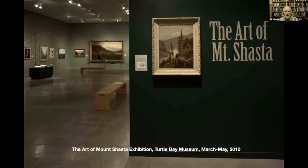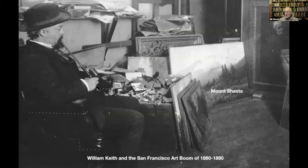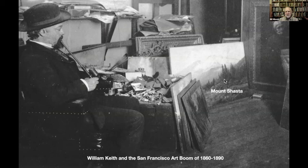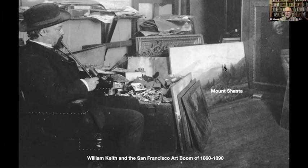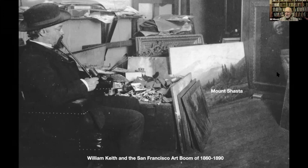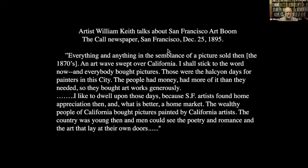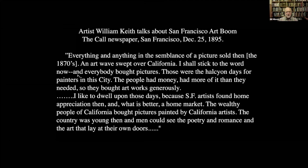So the San Francisco art boom, 1860 to 1890 — I'm going to try to explain where all these paintings came from, how come. William Keith was called the Dean of San Francisco painters back in 1860, 1870, 1880, 1890. He was a very popular painter, made a lot of money. He's John Muir's best friend — the two of them traveled together for 30 years. He was asked in 1895 to reminisce about the San Francisco art boom. He said: 'Everything and anything in the semblance of a picture sold then in the 1870s. An art wave swept over California. Everybody bought pictures.'